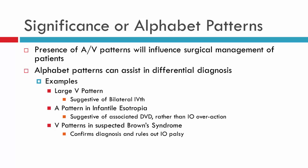Another example — we haven't done Brown syndrome yet — but you will soon learn about the differential diagnosis between inferior oblique palsy and Brown syndrome. AV pattern detection assists in providing supporting clinical evidence for either a Brown's or an IO palsy, which we'll see in subsequent videos.